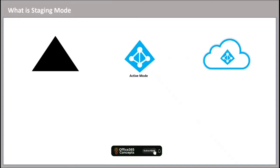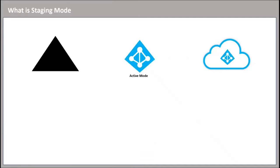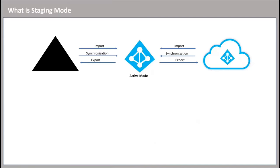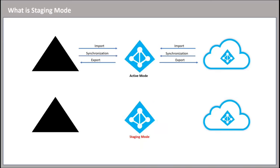To understand staging mode, let's take a look at this diagram. When you install Azure AD Connect in active mode, it runs six sync cycles: two import cycles, two synchronization cycles, and two export sync cycles. But when Azure AD Connect runs in staging mode, it only runs import and synchronization services — it doesn't run the export sync cycle.